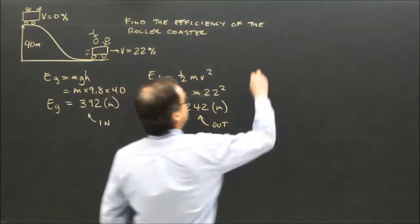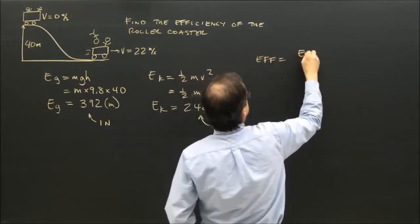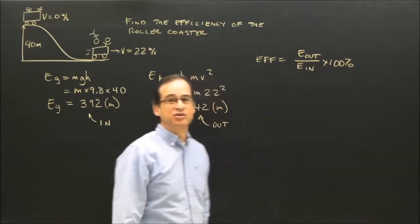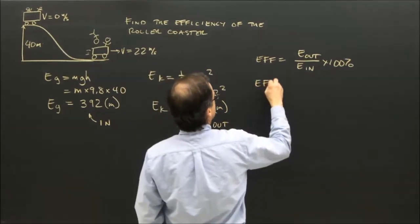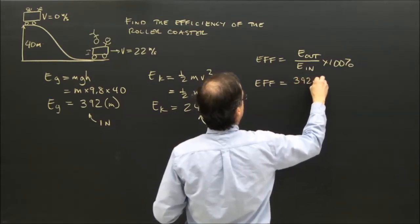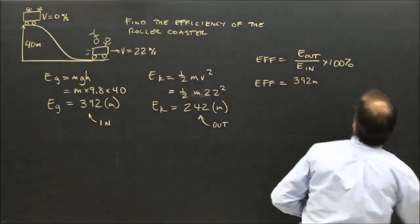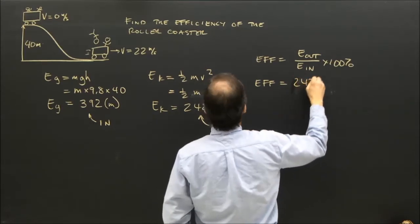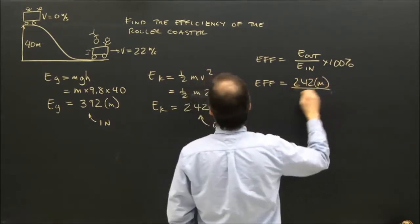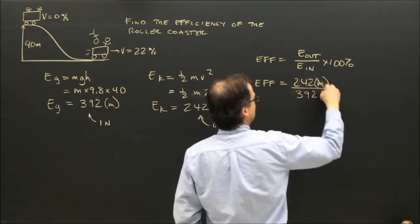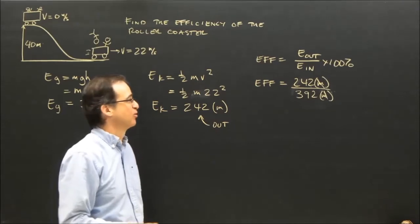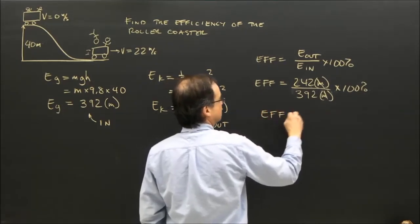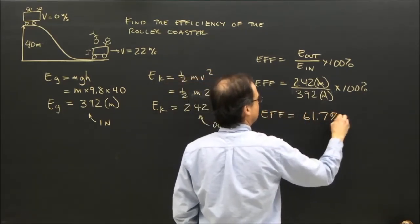To work out the efficiency, the formula is: efficiency equals energy out divided by energy in, times 100%. So I plug that in. The efficiency is energy out—sorry, I did that wrong. The energy out is 242m. The energy in was 392m. So the mass cancels out. It doesn't matter what the mass is. Times 100%, the efficiency is 61.7%.